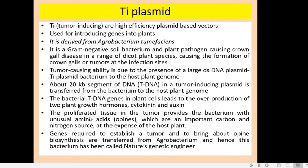When the bacterial T-DNA is inserted into the plant cell genome, it will trigger the overproduction of two plant growth hormones: cytokinin and auxin. This leads to increased proliferation of the plant parts and the formation of tumors. This proliferated tissue or tumor then provides the bacterium with certain amino acids.